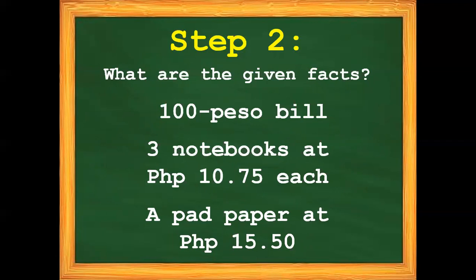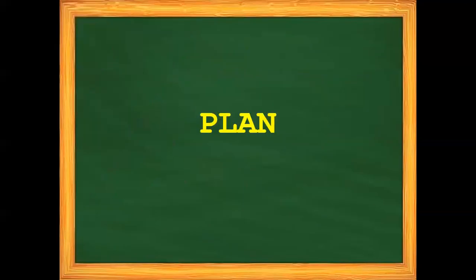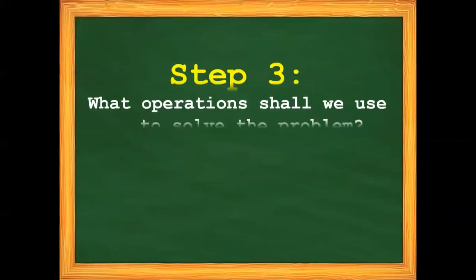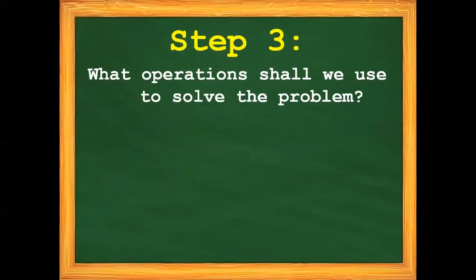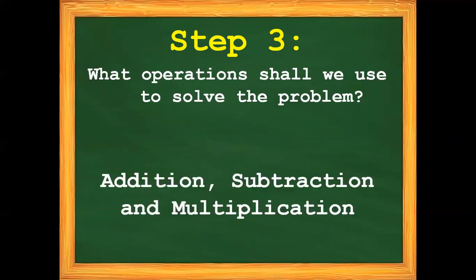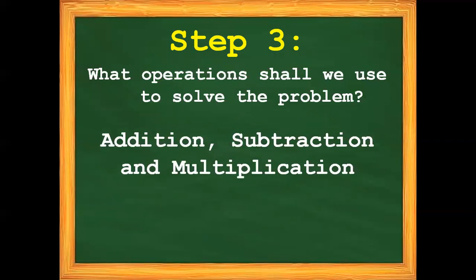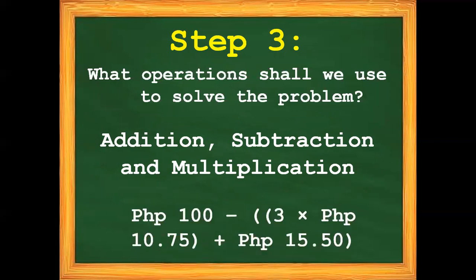Now, after we understand the problem, we have to plan. Step number three: what operations shall we use to solve the problem? We have to add, subtract, and multiply. So our number sentence for this problem is: 100 pesos minus (3 times 10.75), plus 15 pesos and 50 centavos, close parenthesis.